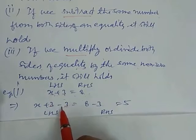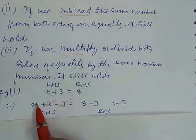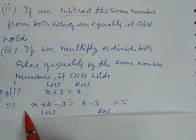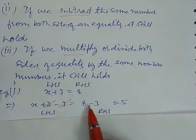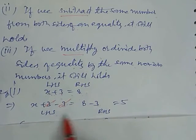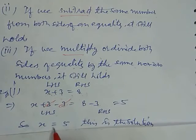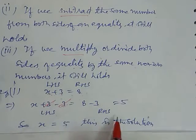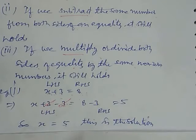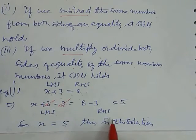By subtracting 3, this 3 cancels out and the variable is clearly available. So, 8 minus 3 is 5, and the left-hand side and right-hand side are balanced. We get the result: x equals 5. This is the solution. So by subtracting something, we can separate the variables.